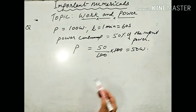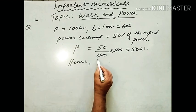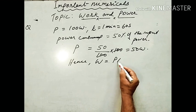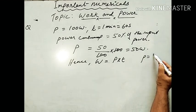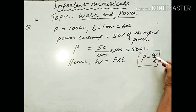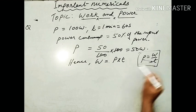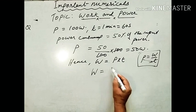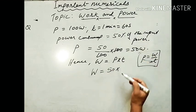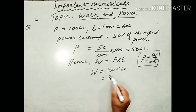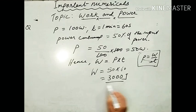Now we can calculate the work done. Since P = W/t, work done = power × time. Power consumed is 50 Watt, time is 60 seconds. So work done = 50 × 60 = 3000 Joule. Very simple.